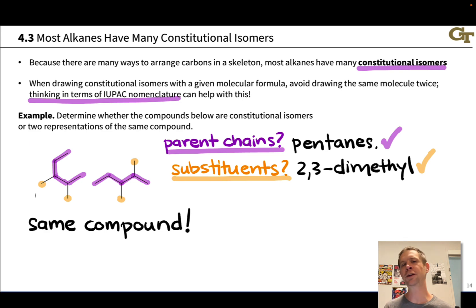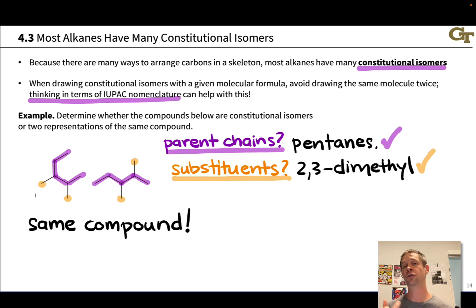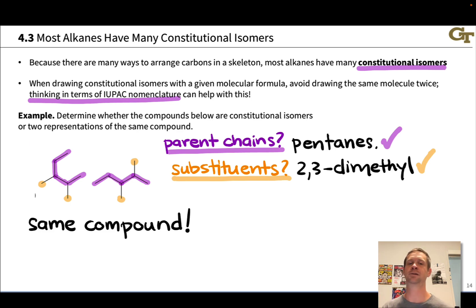In other words, they are the same compound — two representations of the same compound differing only in conformation, differing only in rotation about a single bond. IUPAC nomenclature can help you think about whether two representations are the same or not. Two representations that give the same IUPAC name are necessarily the same compound.